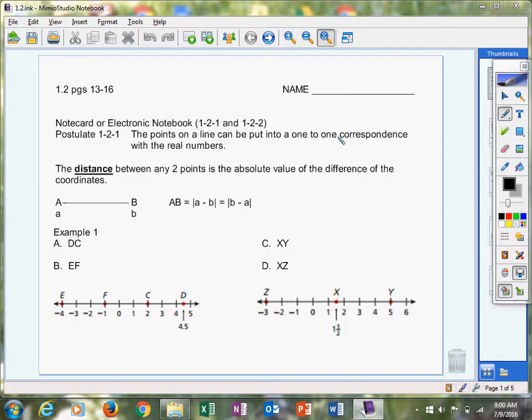It's called Postulate 1-2-1. Remember, the first one is the chapter that you're in. The two is the section here. Now we're in Section 2, 1-2, or 1.2, and then the last one is, this is the first postulate in this section. Okay, remember in the last section, 1-1, we had five postulates numbered 1, 2, 3, 4, 5.